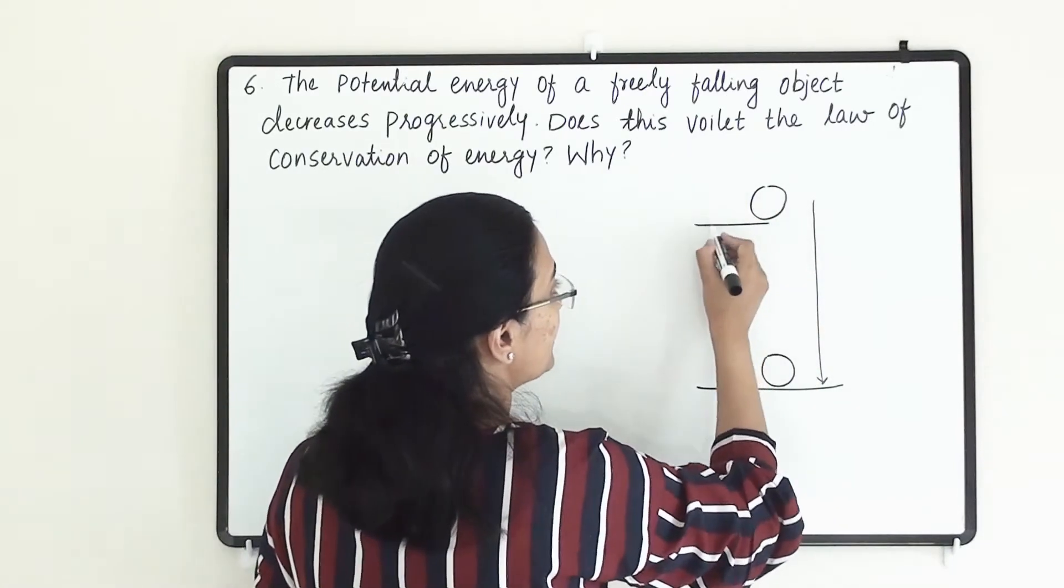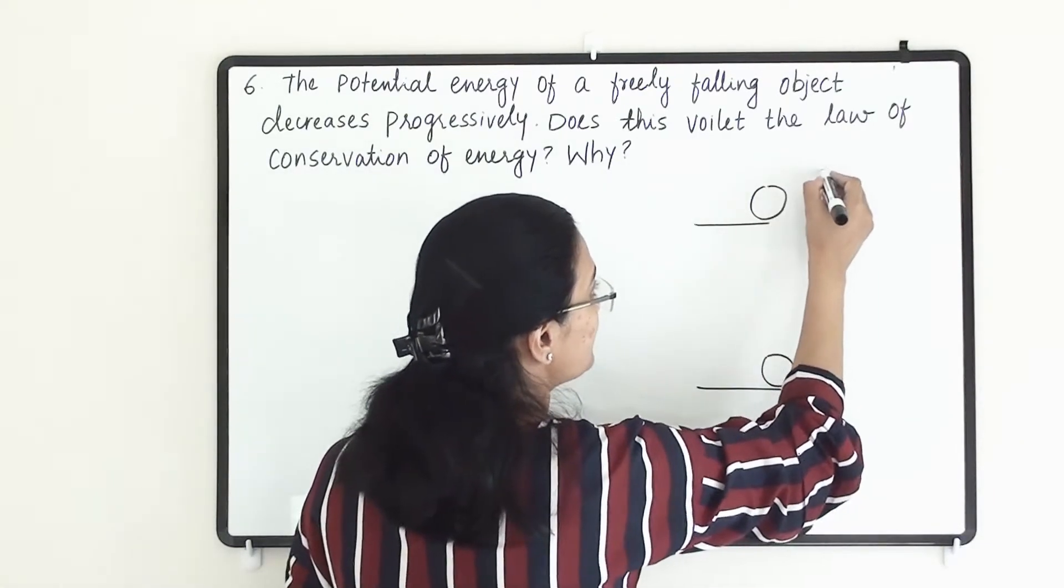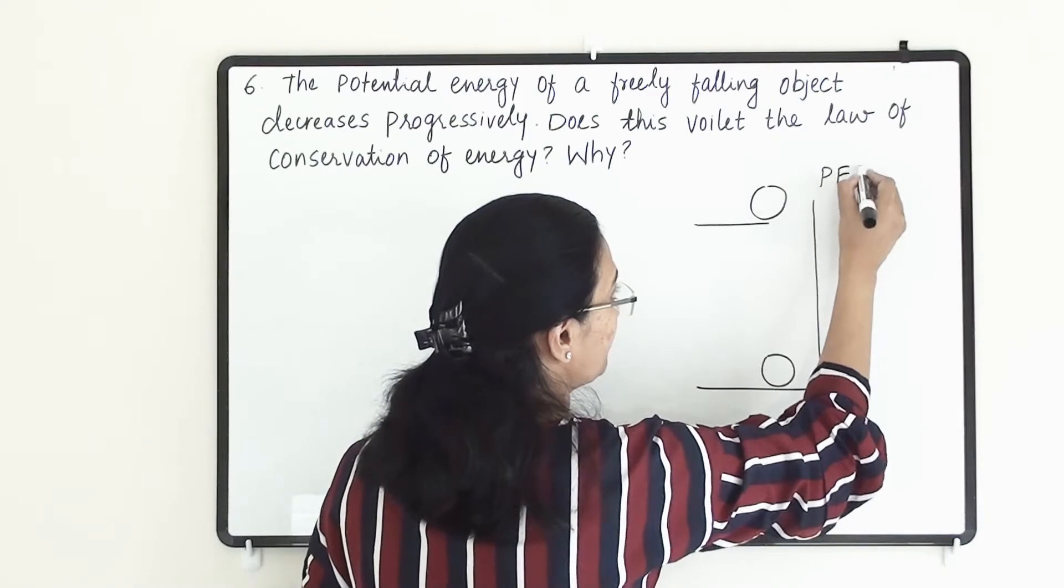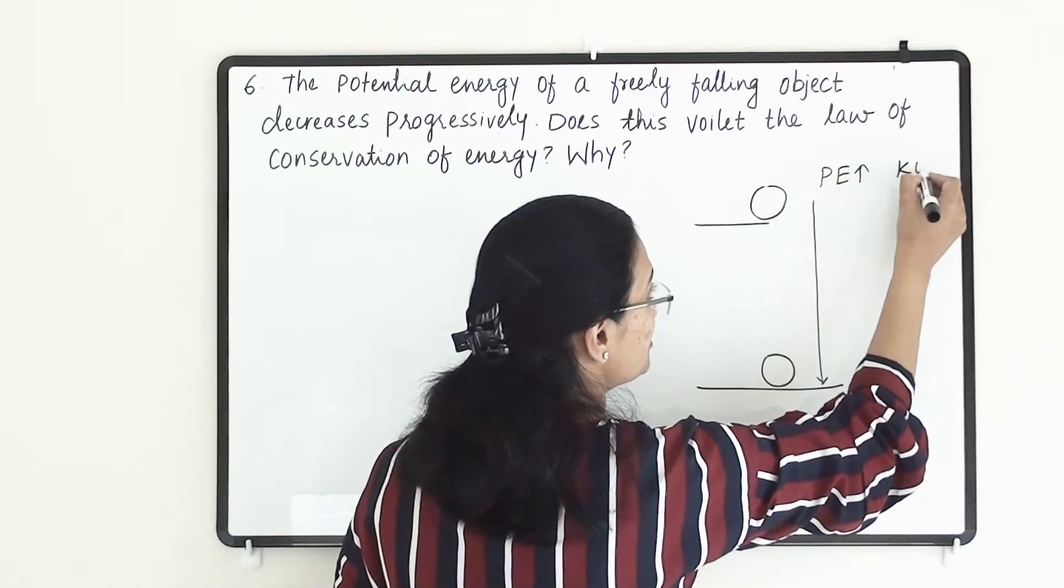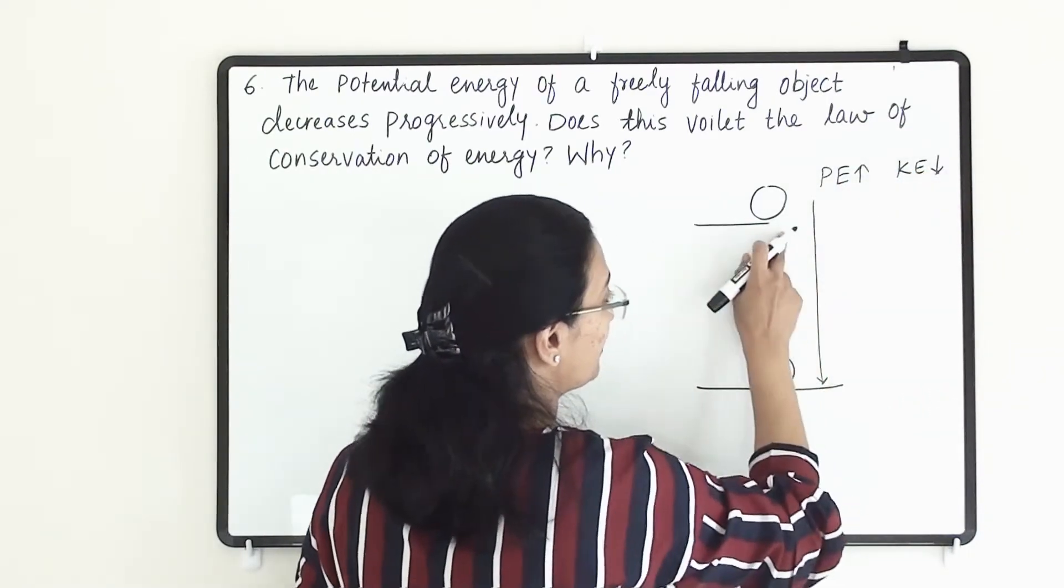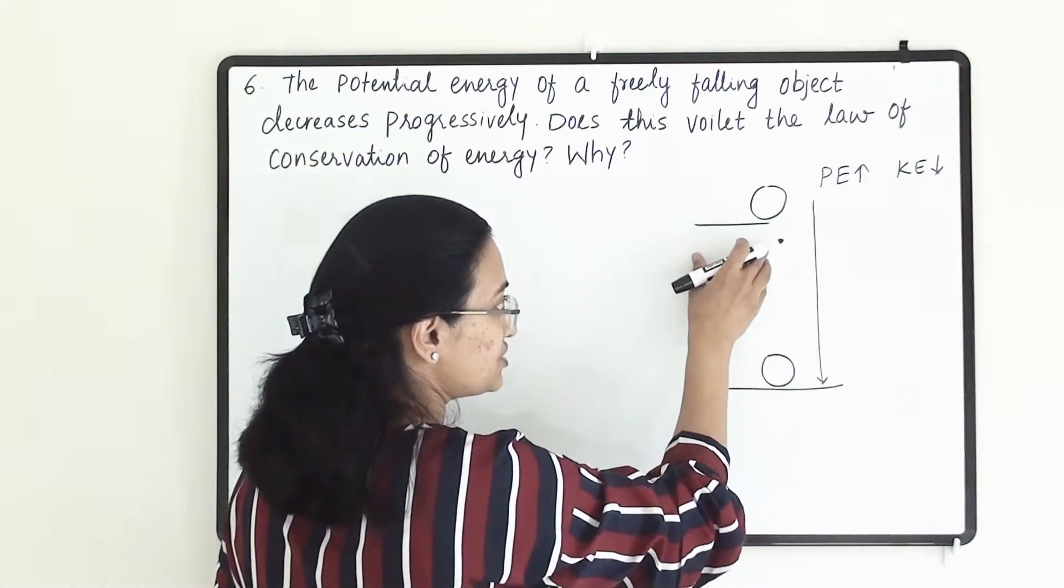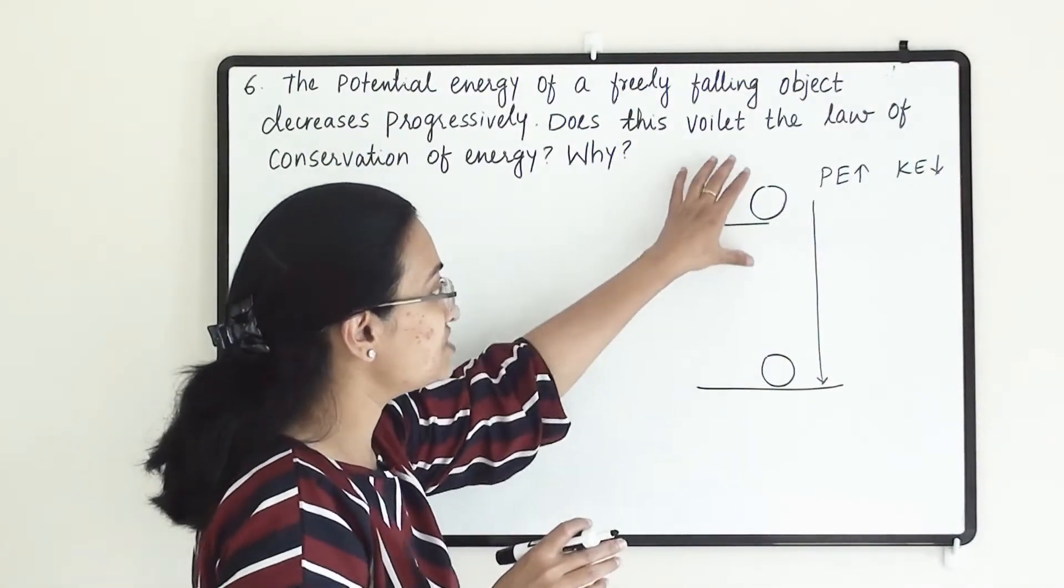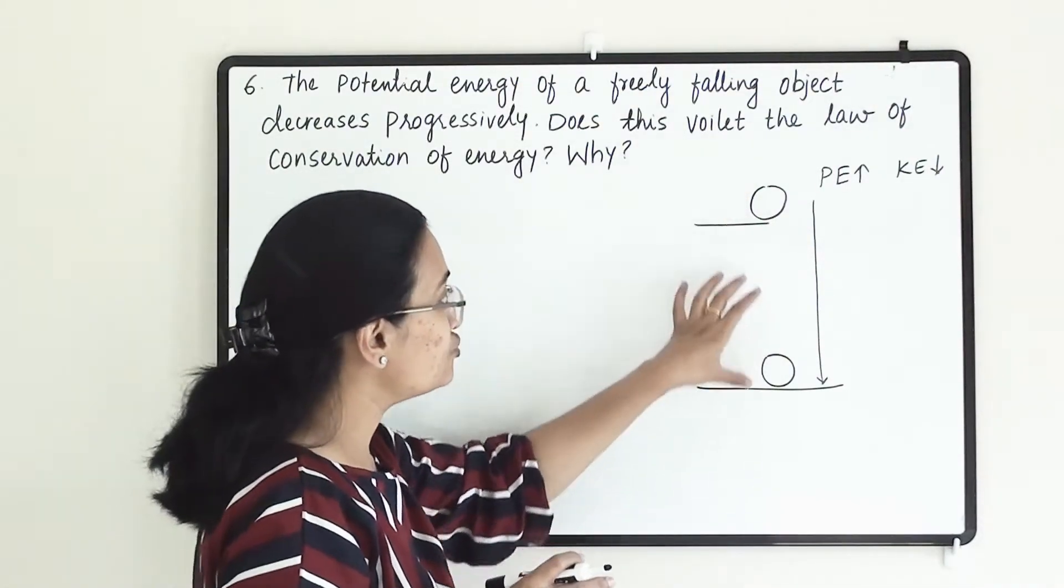When the ball is at the top, its potential energy is maximum and its kinetic energy is minimum because it is at rest. The potential energy it has achieved is due to this height.